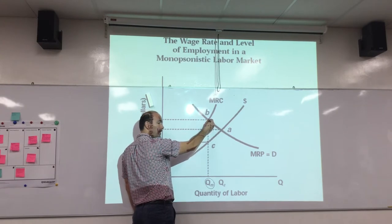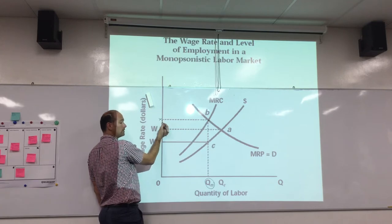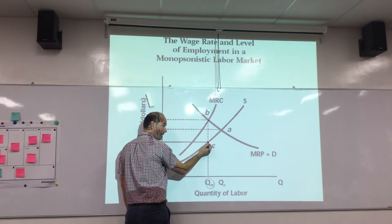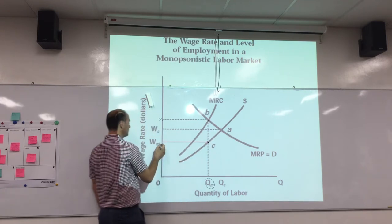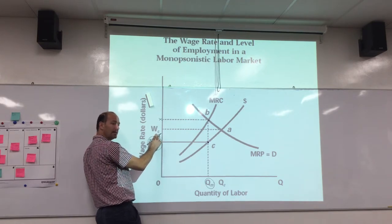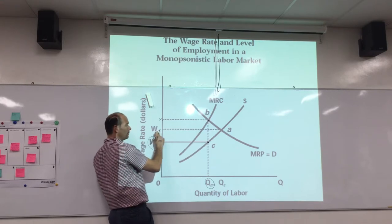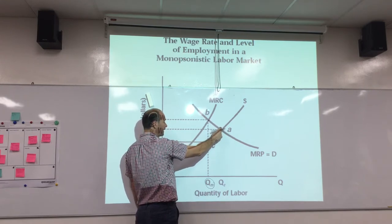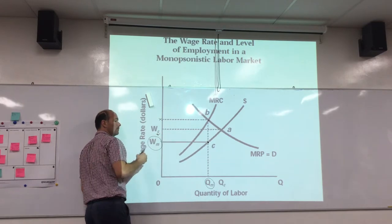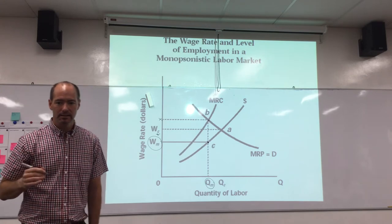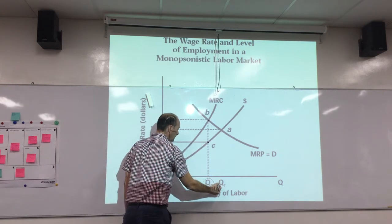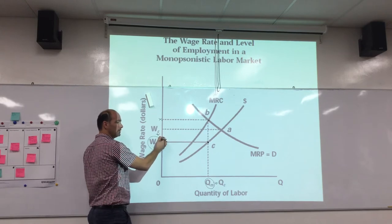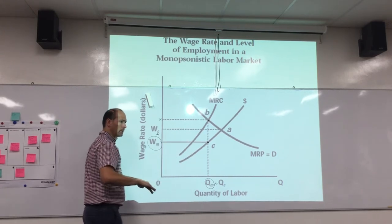The monopsonist doesn't have to pay workers the MRC value to get that quantity of workers — that's just the supply of those workers. He only has to pay them W sub M, the monopsony wage. The competitive wage would be where supply and demand intersect. The main effects are that the quantity of labor hired is lower — less employment — and the wage rate is lowered. That's obviously good for the firm, not for the worker.